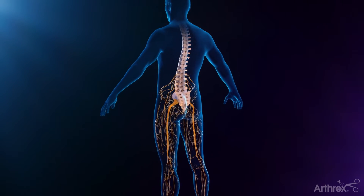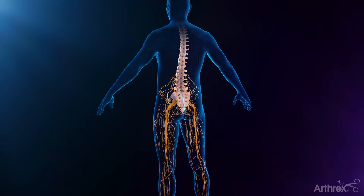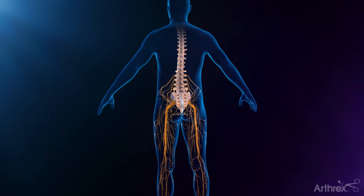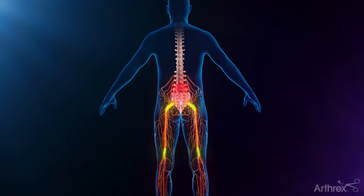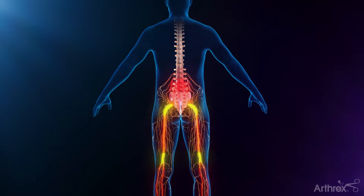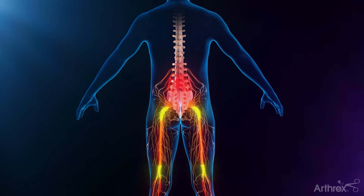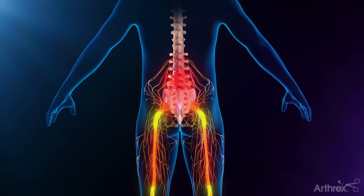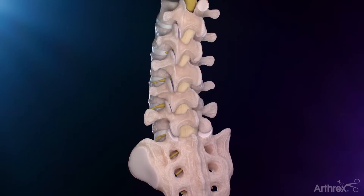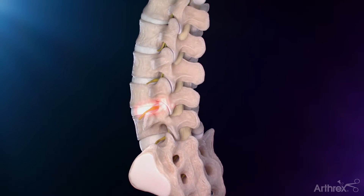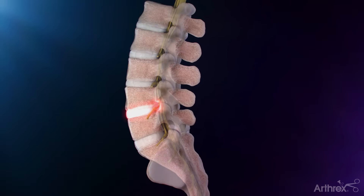Degenerative disc disease is often to blame and causes stresses in the disc structure that lead to herniations. As the integrity of an intervertebral disc decreases, the ability of the annulus to contain the nucleus also decreases.